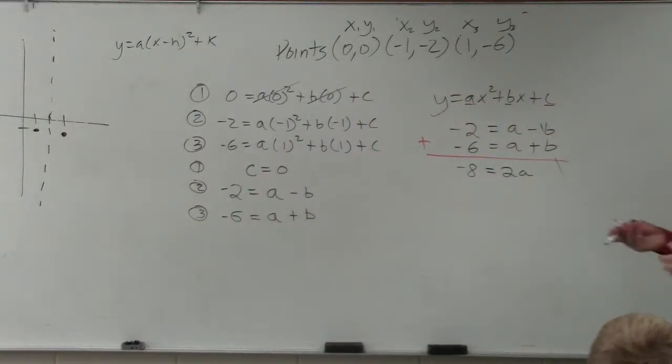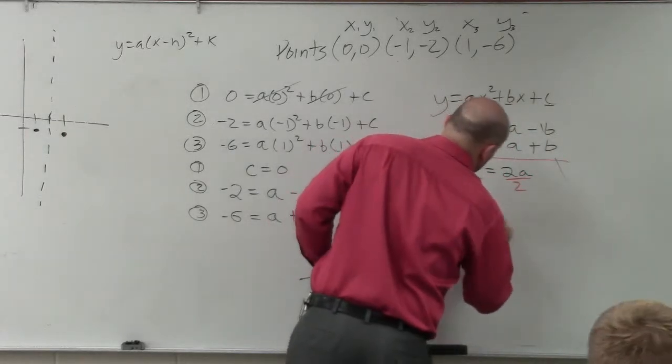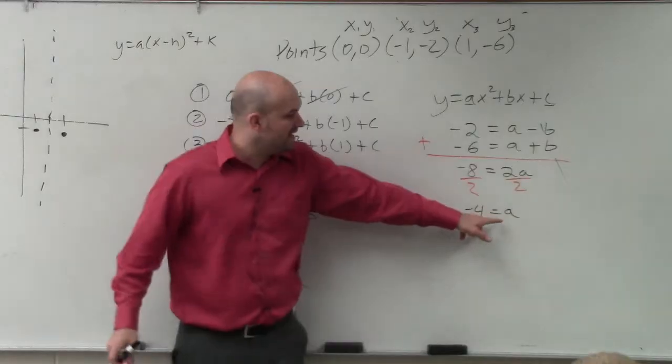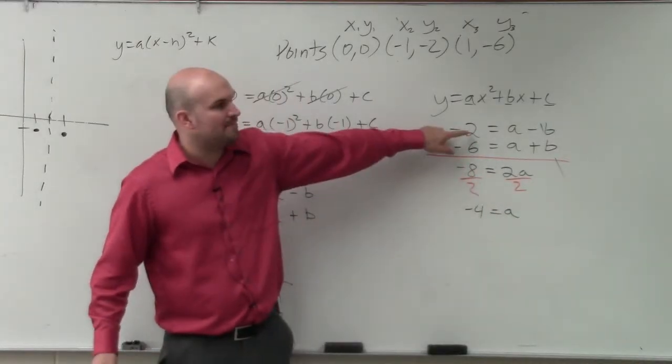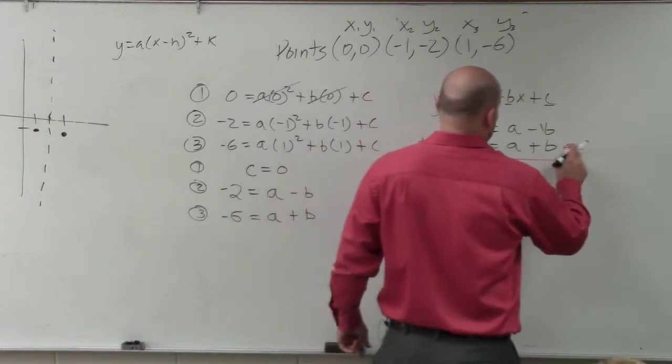I get negative 8 equals 2a. Those divide out. Divide by 2. Negative 4 equals a. Then once I know what a is, I can plug it back into one of these equations to solve for b. I'll plug it into that equation or right over here.